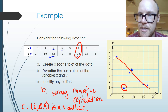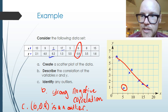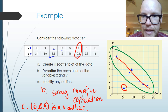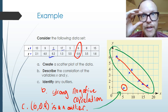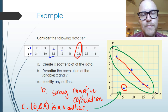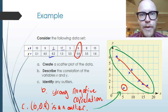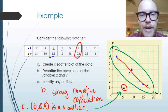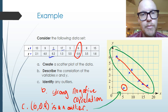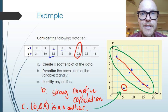For part c, we need to identify any outliers. The point (6, 0.9) is certainly an outlier — it sits very far away from the rest of the data, which all exists in one general area. So let's review the learning goals: we now know how to plot bivariate data on a scatter plot, describe the correlation as weak, moderate, strong, or perfect and positive or negative, and determine outliers that sit far away from the main set of data.